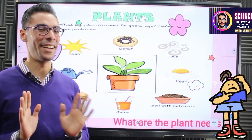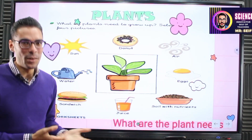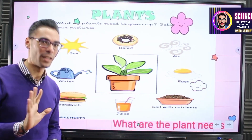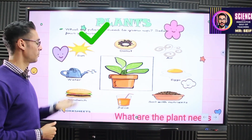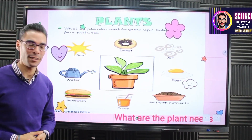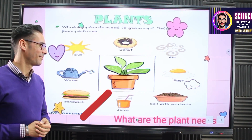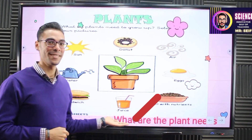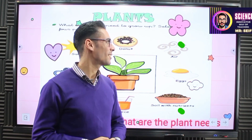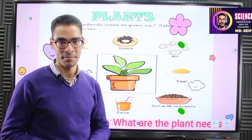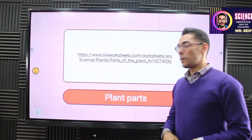Which one do you recommend? It's important for the plant, not for you. The plant doesn't eat donuts. So the plant needs sun — excellent. Water — perfect. No sandwich or juice. They need soil and nutrients, and also air to stay alive, like the rest of living organisms.